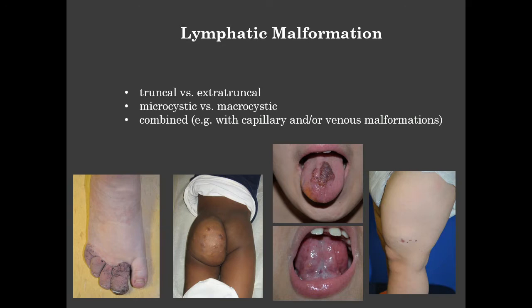Medical therapy with sirolimus was offered to the family, and they thus far are not agreeable to that, but I think they will turn the page as there's more experience with that medication. This is a child who presented with a large buttock lesion found to be lymphatic on MR—it also transilluminated. This is a patient with lymphatic malformation in the tongue, often presenting with a raised area in the midline that can look red.